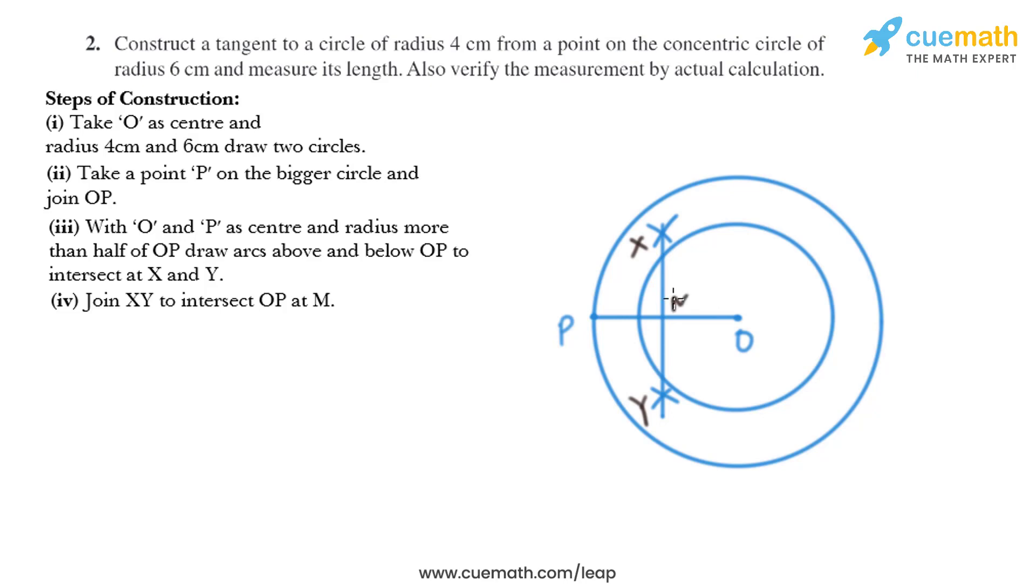So this X Y intersect OP at M. Now in the next step, with M as center and OM as radius, draw a circle to cut the smaller circle at Q and R.